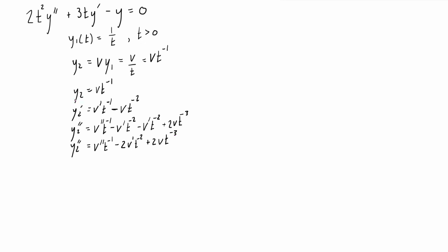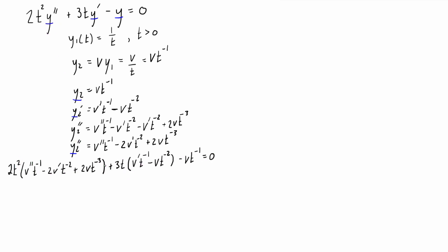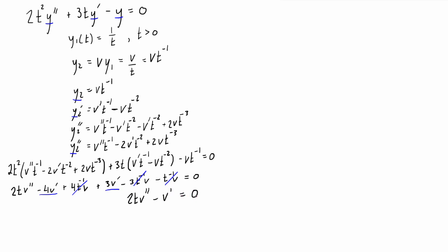Now we substitute y2, y2', and y2'' into the original differential equation. After distributing to clear the brackets and simplifying, the terms 4t⁻¹v, minus 3t⁻¹v, and minus 1t⁻¹v all cancel each other out. The v' terms combine: negative 4v' and positive 3v' give negative v'. So we're left with 2t·v'' minus v' equals zero.